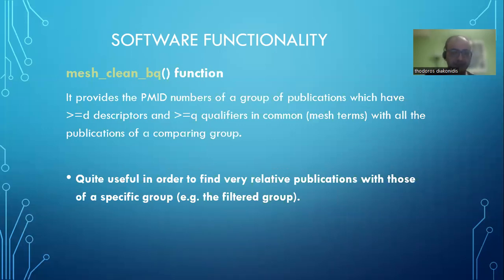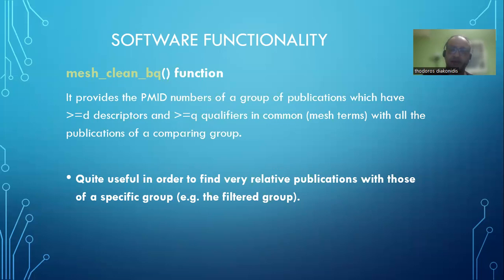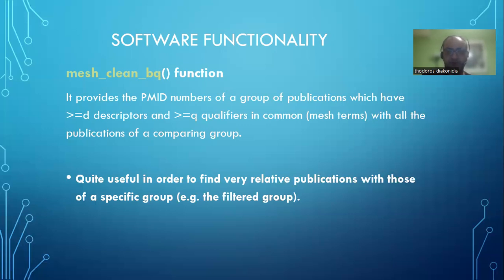An extra function included in the package is the mesclimbq function. If you have a group of publications and you want them to share a certain number of MeSH descriptors and qualifiers — more than D descriptors and more than Q qualifiers — with a comparing reference group (such as the four or five publications used earlier), this function filters the larger group to find which publications have those MeSH terms in common, further narrowing your results.